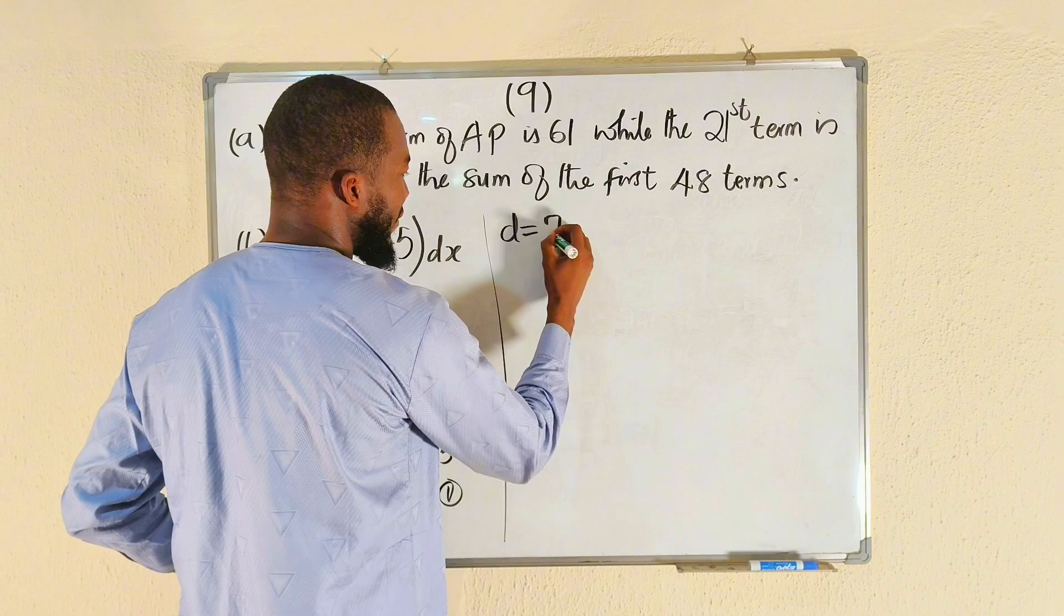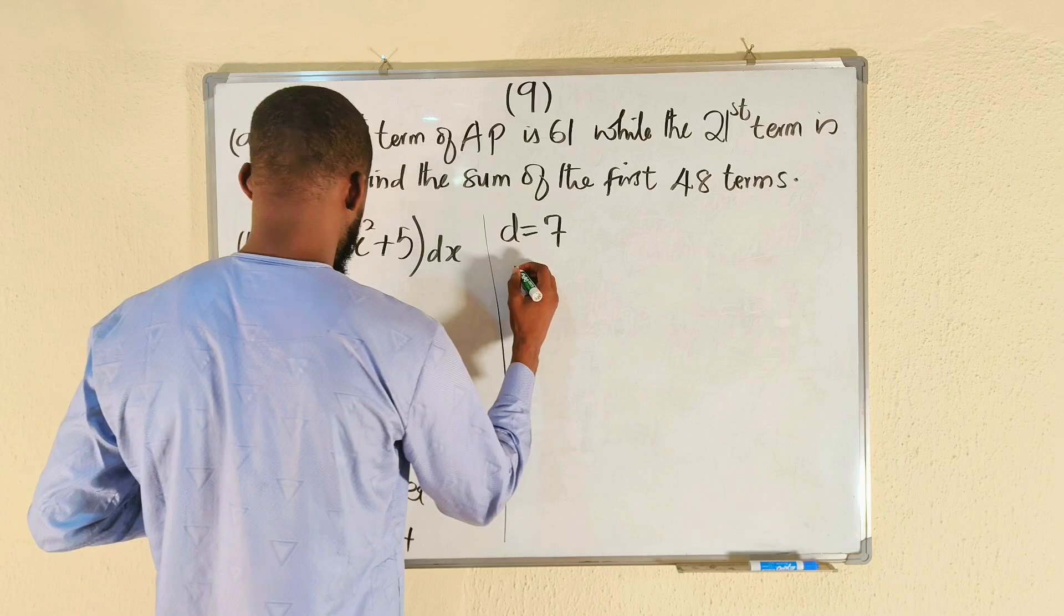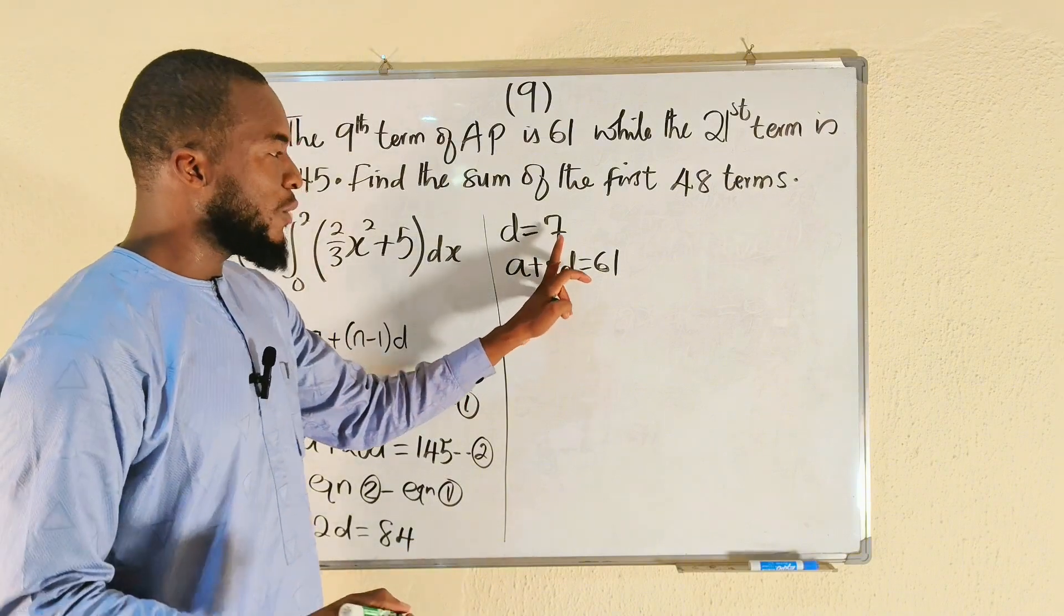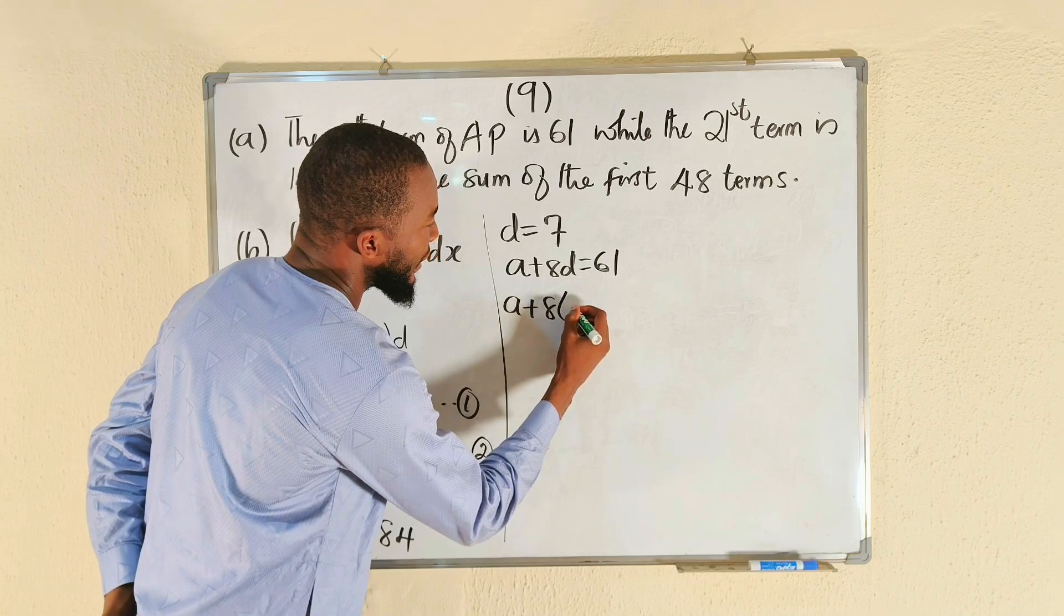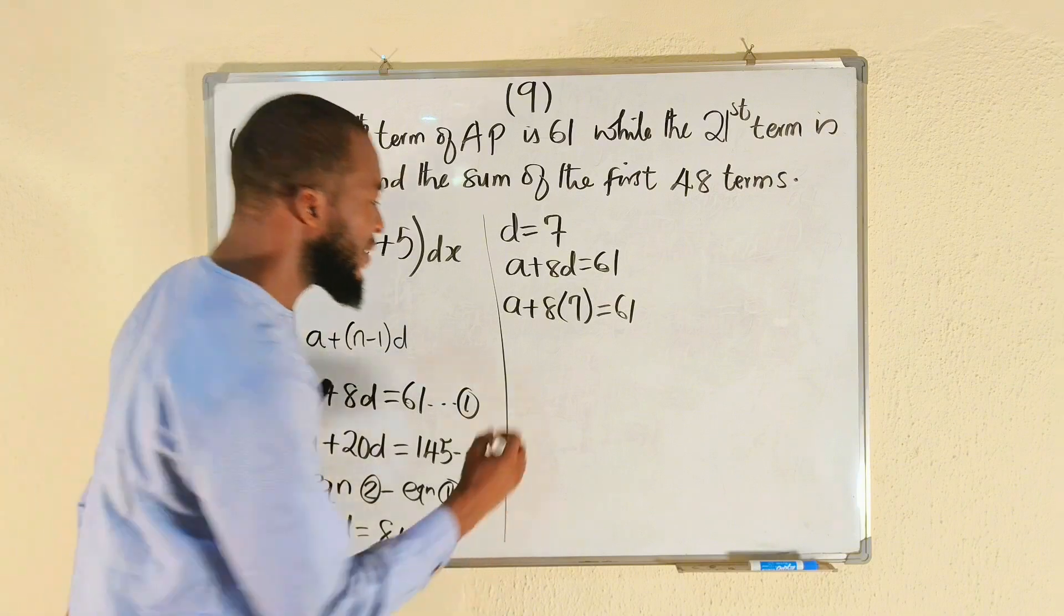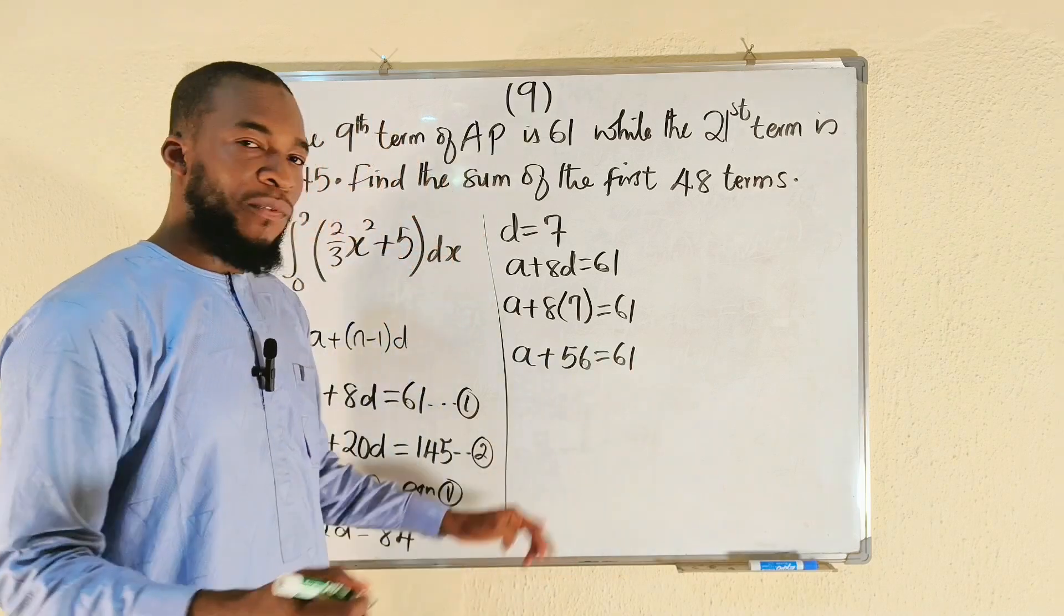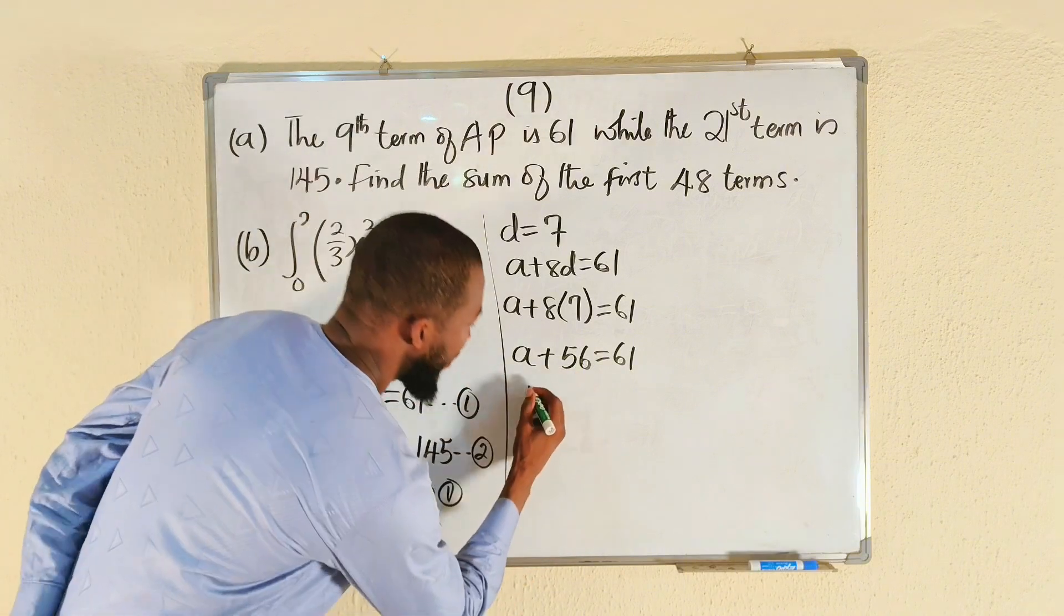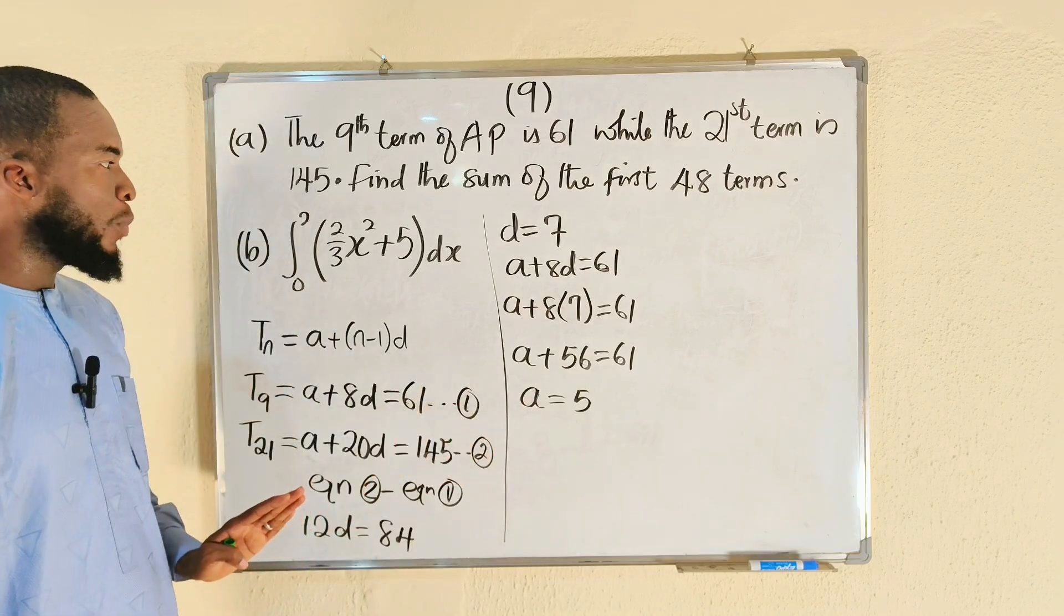Then we need to find a as well. We can use this equation: a plus 8d equals 61. Wherever we have d, we're going to substitute it with 7. So this is a plus 8 multiplied by 7 equals 61. 8 multiplied by 7 is 56, so a plus 56 equals 61. To find a, we subtract 56 from both sides: 61 minus 56 is 5. So a is equal to 5.